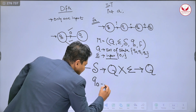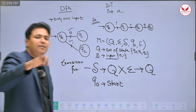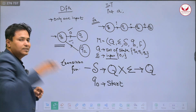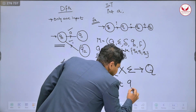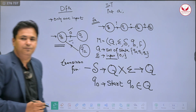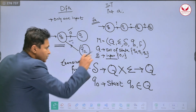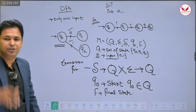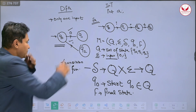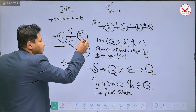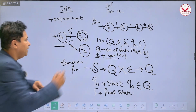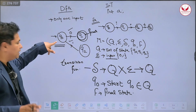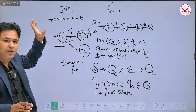The next tuple is Q0 — it is the initial state, the start state from where the machine begins, represented with an arrow. Q0 belongs to Q because it is a part of the set of states. Next is F, which represents the final state where the machine halts. If a state like Q1 is shown with a double circle, it represents the final state. So Q1 is the final state, Q2 is not, and Q0 is the initial state.